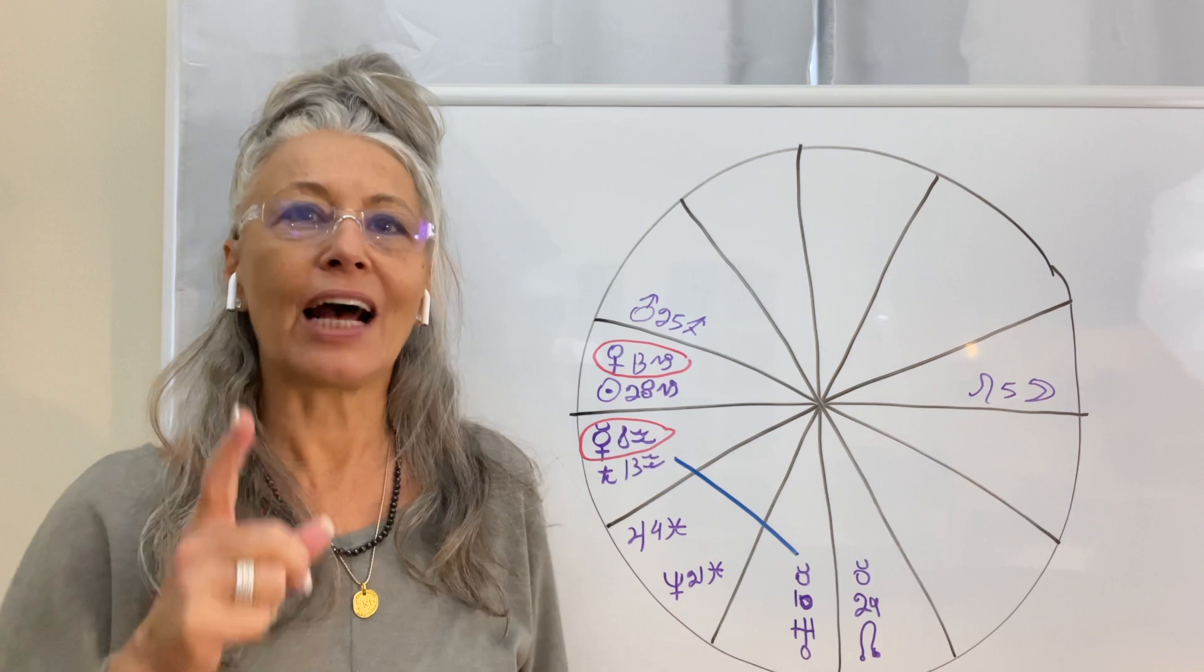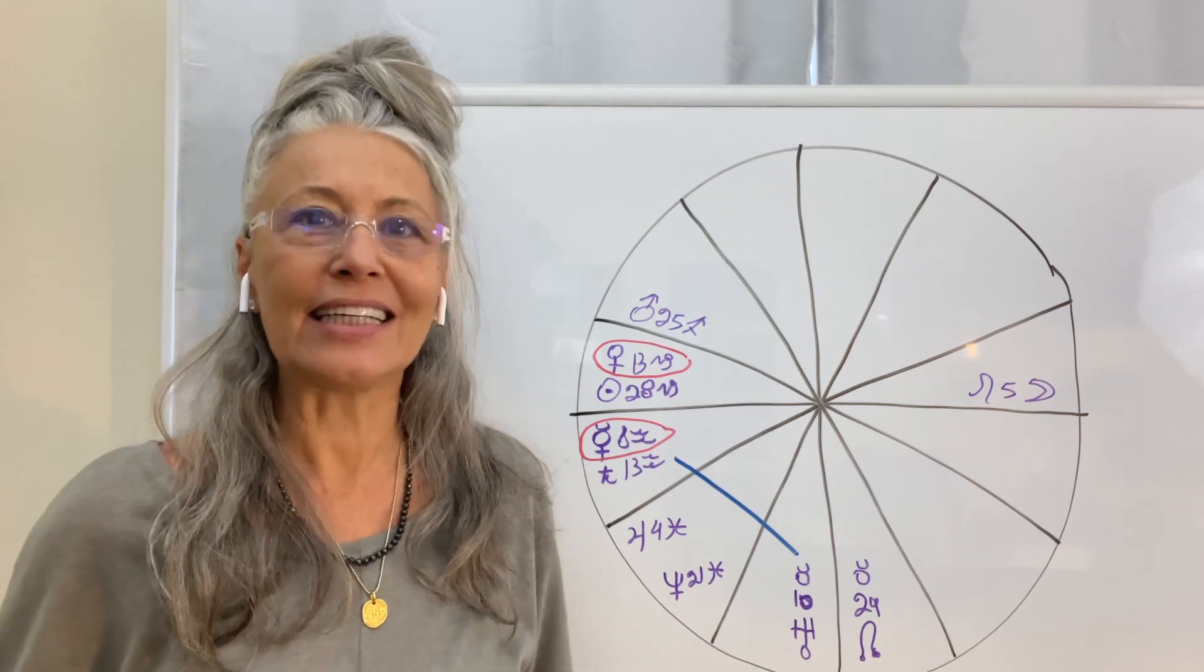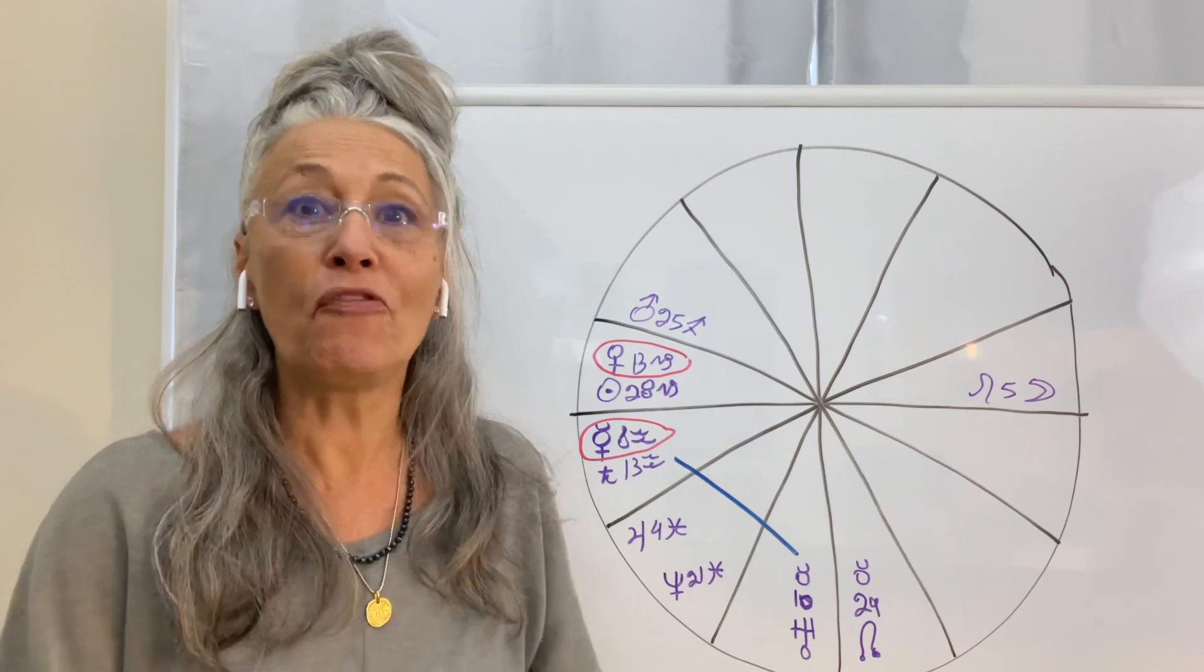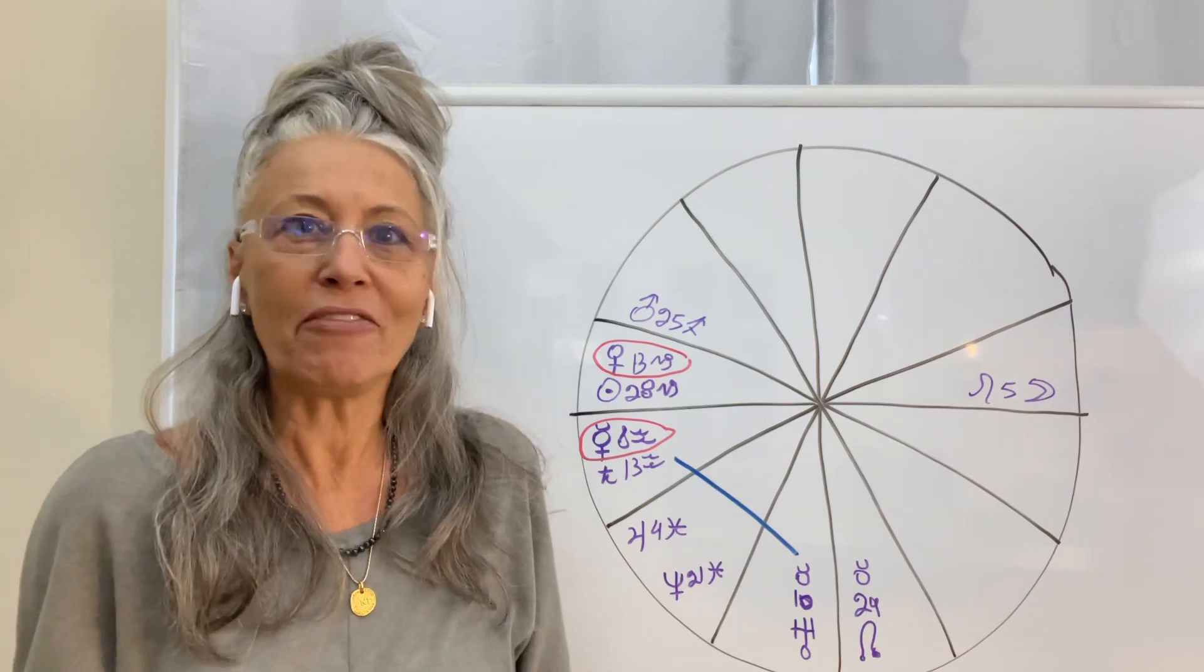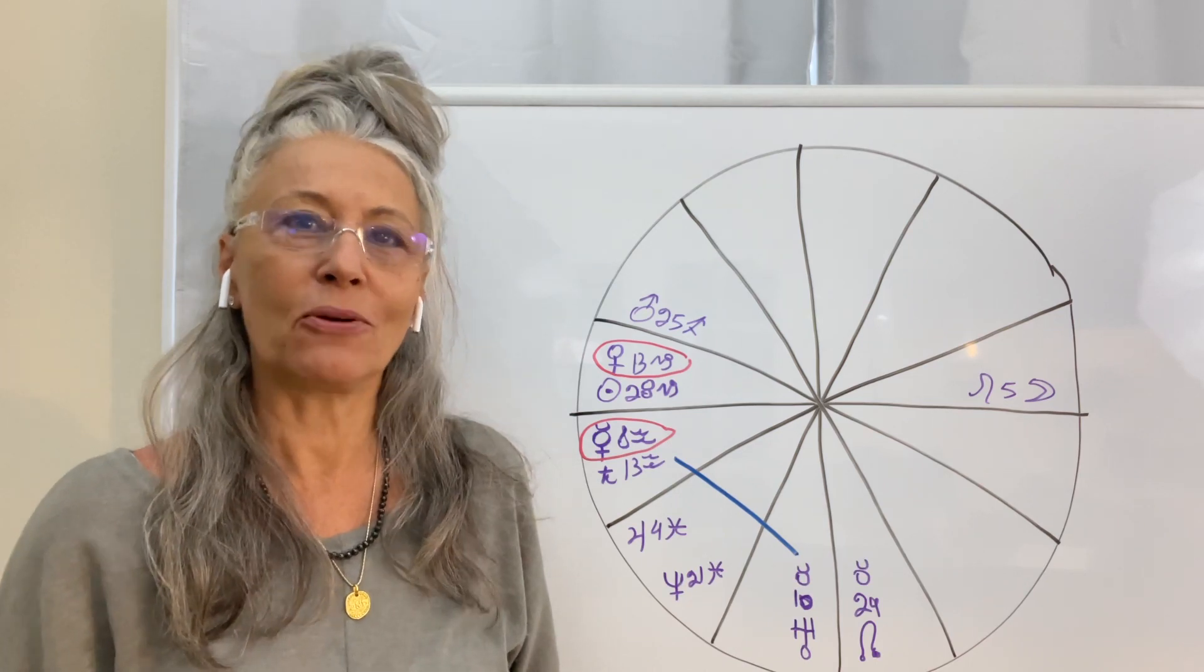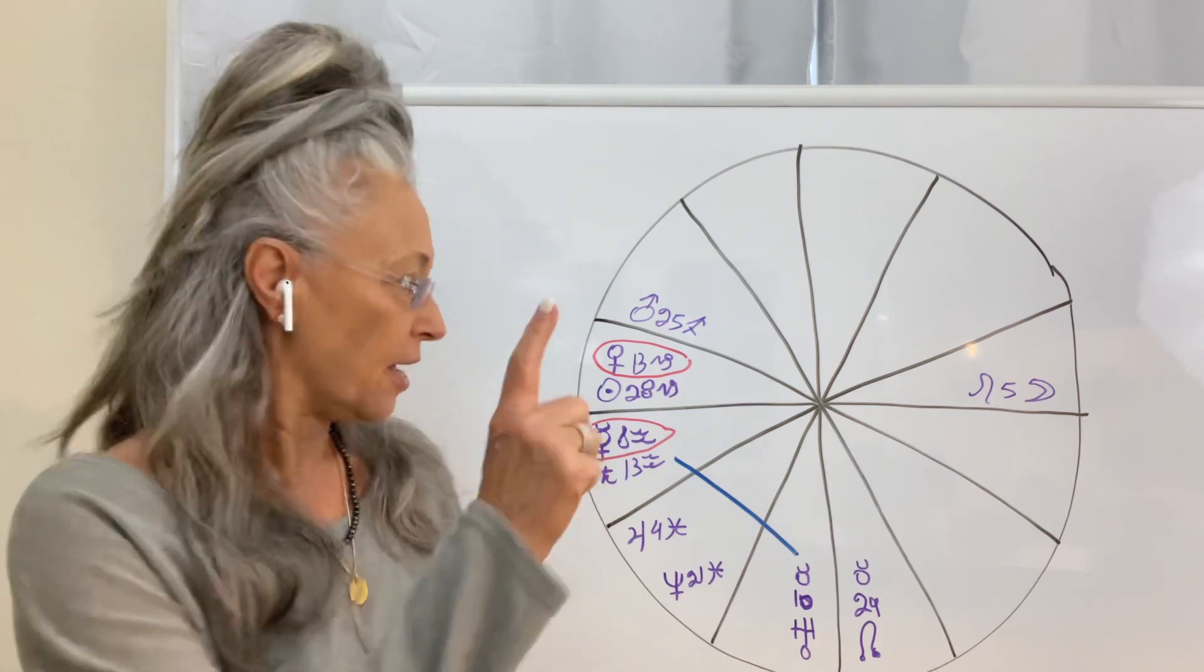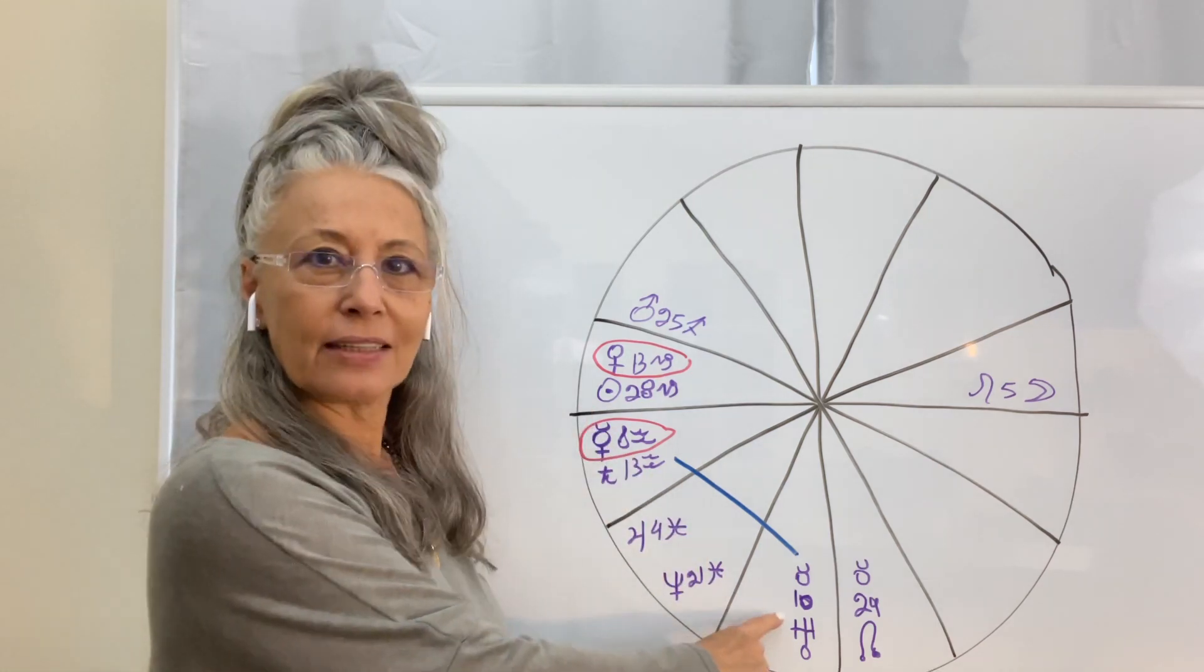And then I remember, aha, Uranus went direct today. Obviously, we finally get this aha moment and move forward feeling. Don't you have it? Check with yourself if something is different today because while we were sleeping, or at least I was sleeping in my part of the world, Uranus went direct at 10 degrees Taurus.